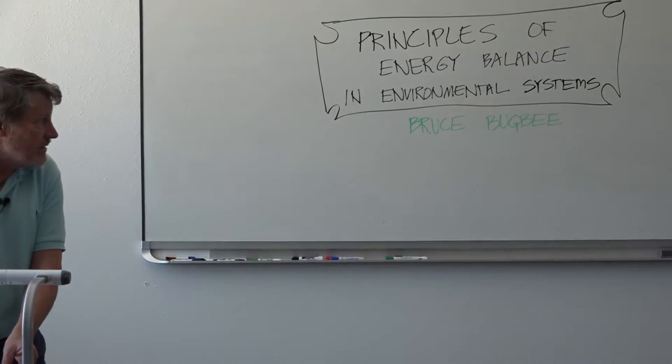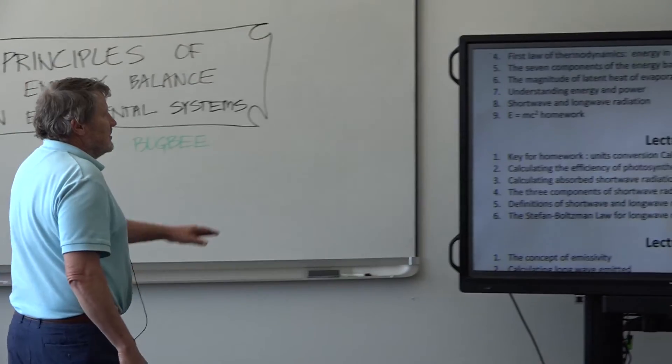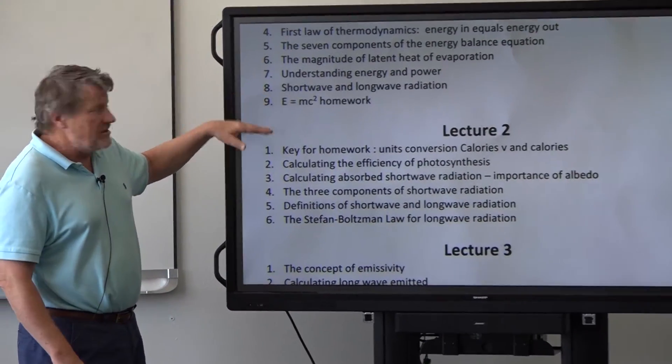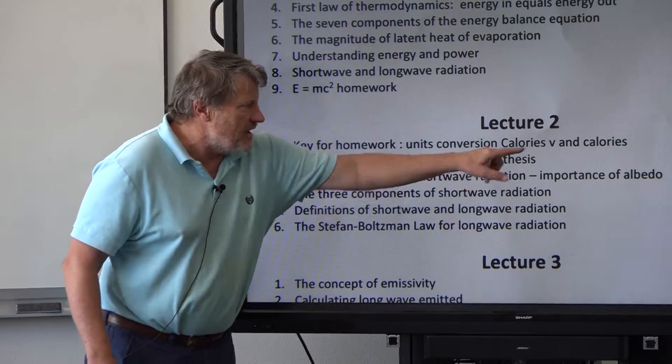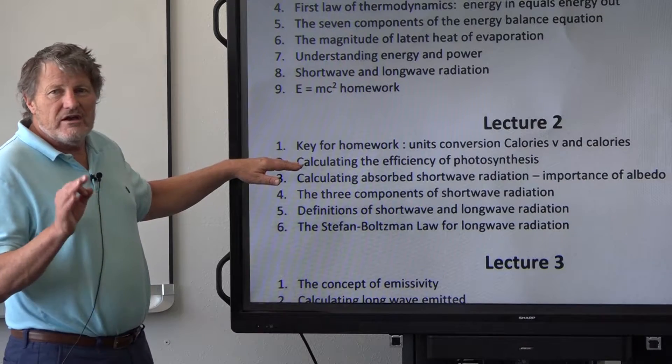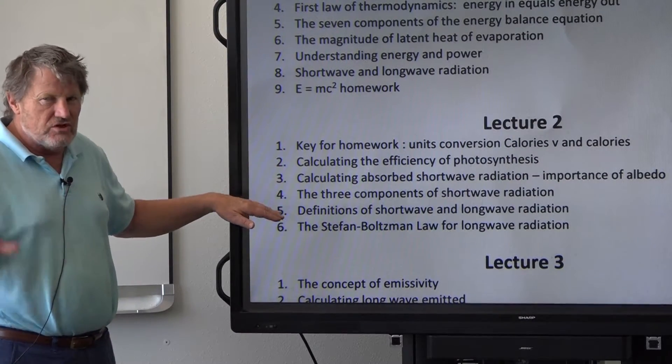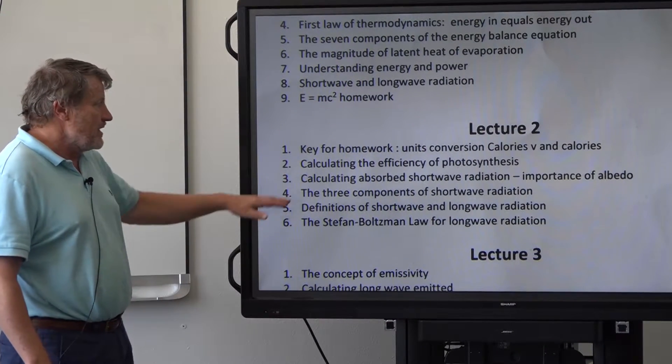Now let's take a look at lecture two. We talked about the key for the homework, how to calculate the energy in a pea seed, units of conversions, capital C for calories, lowercase. Then we calculate the efficiency of photosynthesis and show that this is really so small we can ignore it in these principles.